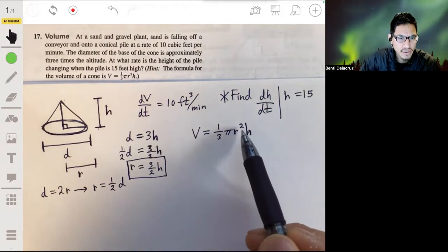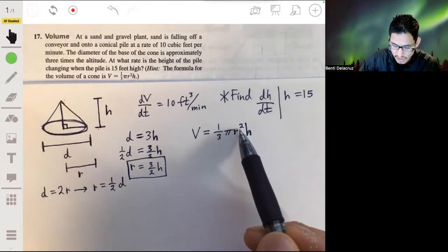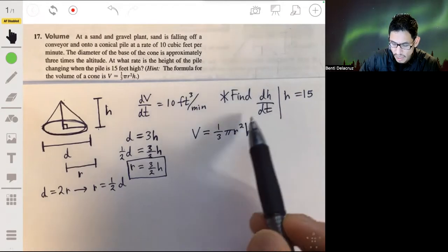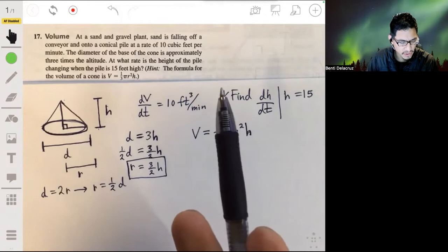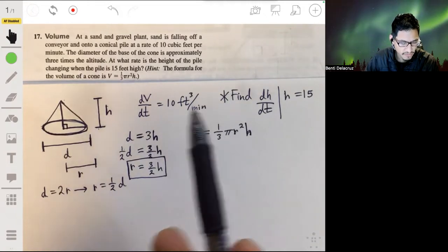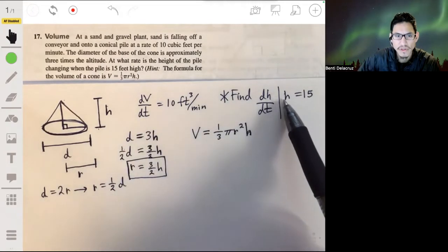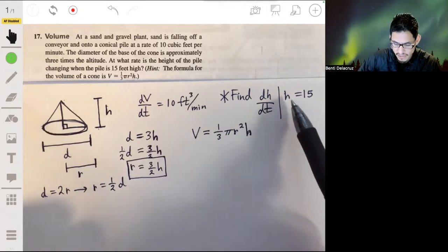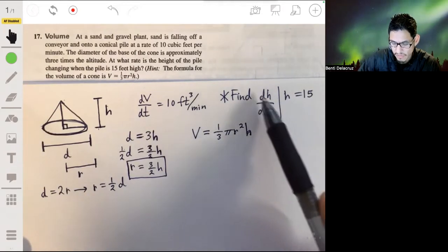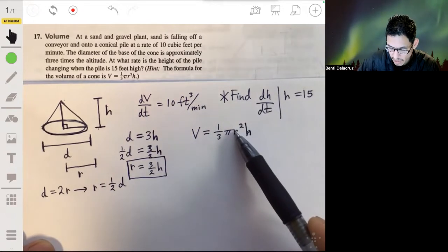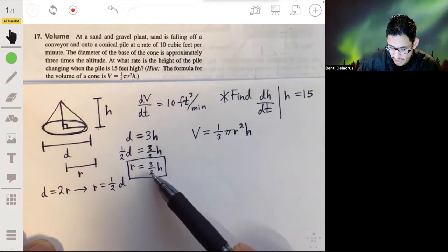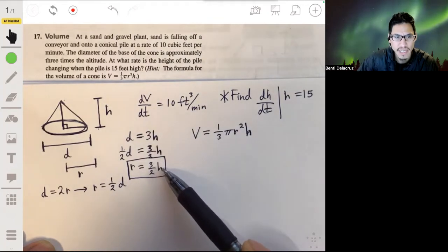Because the fewer variables we have in our equation, usually it will make it simpler, especially if you know what you're trying to find. In this case, it's something in terms of height. We're not trying to find dr/dt. So let's replace r here with three halves times h.